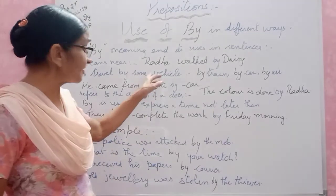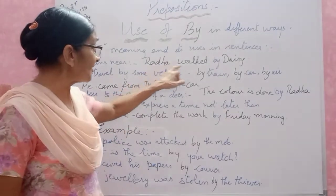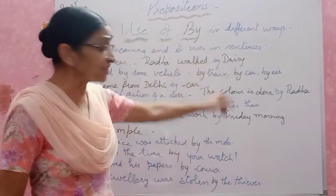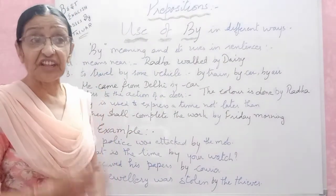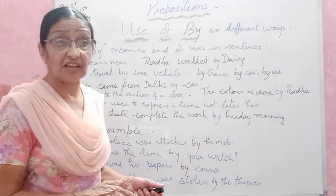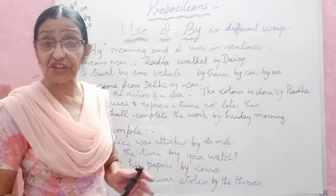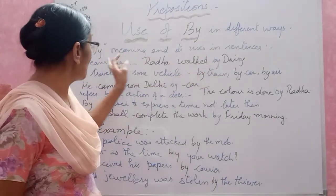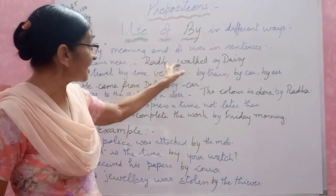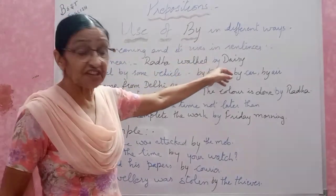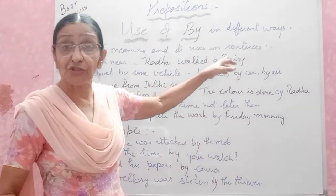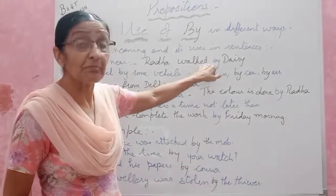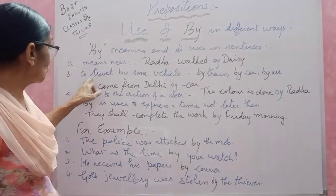So how does this sentence work? 'Rather walked by Daisy' — it means Daisy is on her other side. Both are on the other side and they are nearby. Daisy is on the other side. Both are on the other side, and this is the meaning of 'by' as 'near.' That completes the second point.